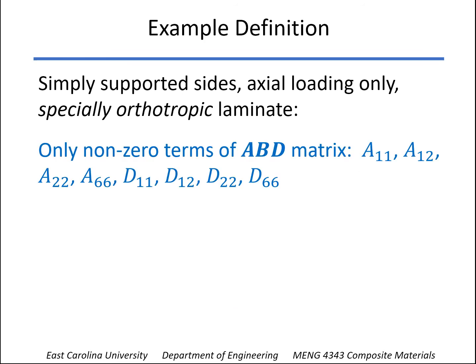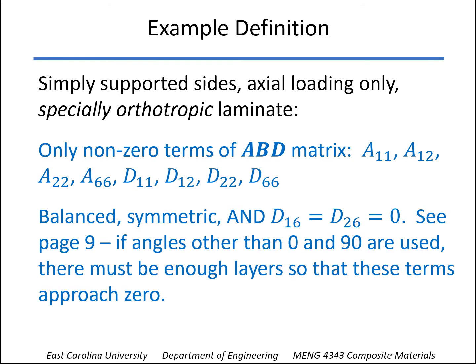So when we said specially orthotropic, it means that the B matrix is completely zero. A16 and A26 are going to be zero, which makes it balanced. But also D16 and D26. Now if you go back to page 9 of the ClassNote course packs, you'll see that when we had a plus and minus 30, we were able to get those numbers smaller and smaller if we used more thin layers so that they approach zero.